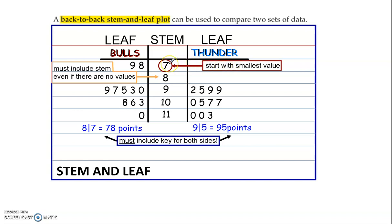You start with the smallest value. You don't always start at zero. Okay, so there wasn't a game where the Bulls scored only five points, right? Their lowest-scoring game was 78. Notice that this is not 87. If we look at the key here, 8 slash 7 is read as 78. So their lowest-scoring game was 78 points.